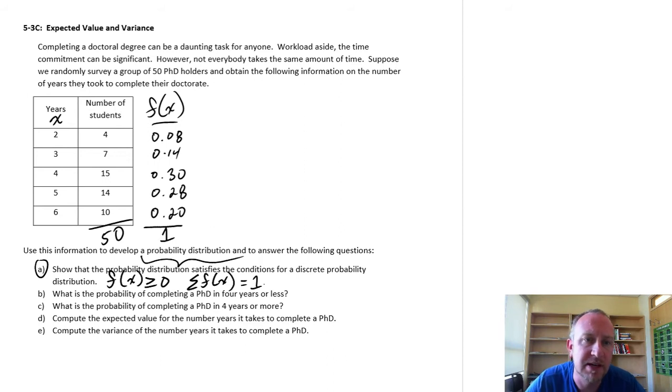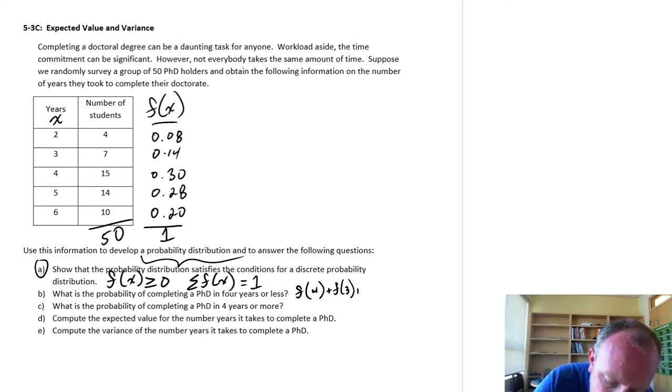Moving on then to part B. What is the probability of completing a PhD in 4 years or less? If we were to randomly select somebody with a PhD, what's the probability that that individual PhD holder finished their degree in 4 years or less? For this, all we need to do is add up the frequency, or you can think of this as a probability, 4 years or less. So that's the probability associated with 4 years, 3 years, 2 years, and 1 year. So if we added up all of those probabilities, here we can just look at them in our table.